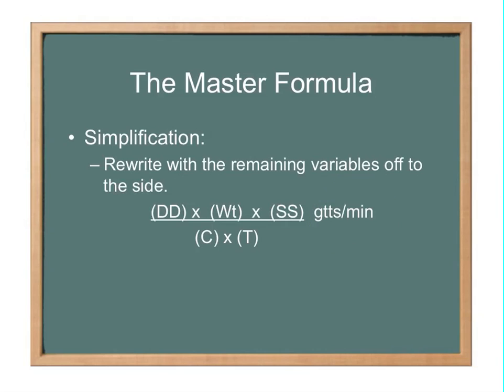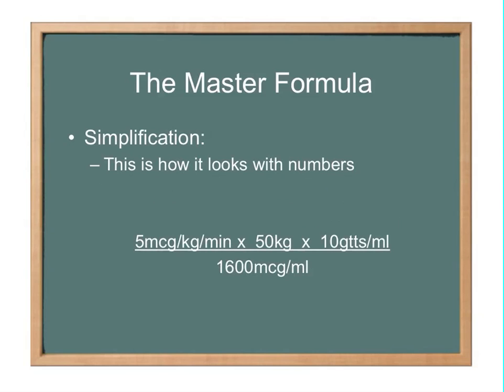So let's do it with some numbers in the master formula. Here we have 5 mcg/kg/min times a patient's weight of 50 kilograms times 10 drops per milliliter because you're using a 10 drop set over 1600 mcg/mL. That's your concentration. So we've crossed out all the doubles and then we just put circles around what was left and we were left with drops and minute. So your answer is going to be in drops per minute.